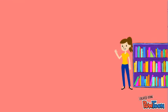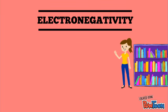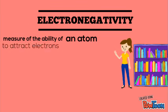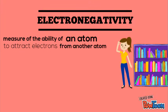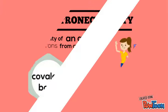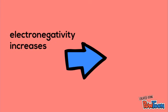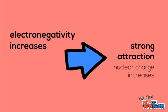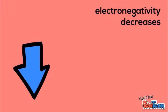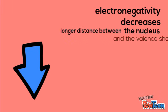Finally, the electronegativity trends. Electronegativity is a measure of the ability of an atom to attract pairs of electrons from another atom to form a covalent bond. From left to right across a period, the electronegativity increases due to the stronger attraction the atoms obtain as the nuclear charge increases. Moving down a group, the electronegativity decreases due to the longer distance between the nucleus and the valence electron shell, which decreases the attraction.